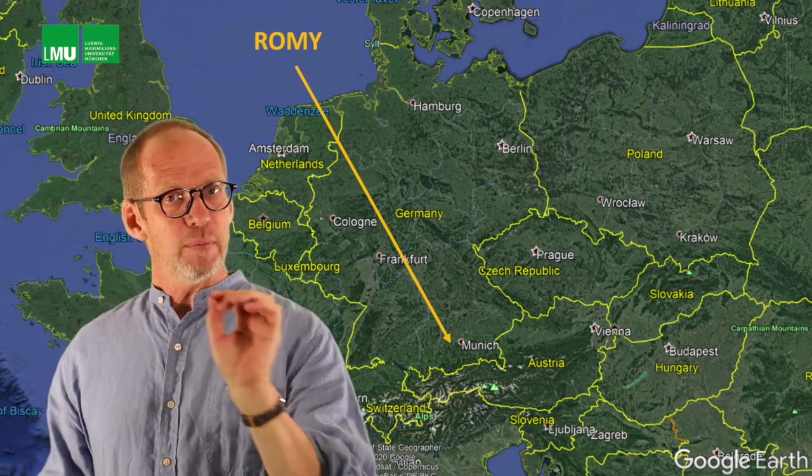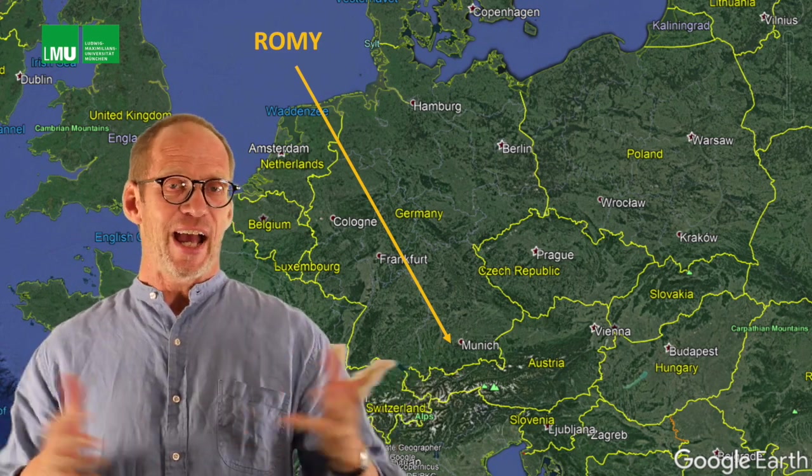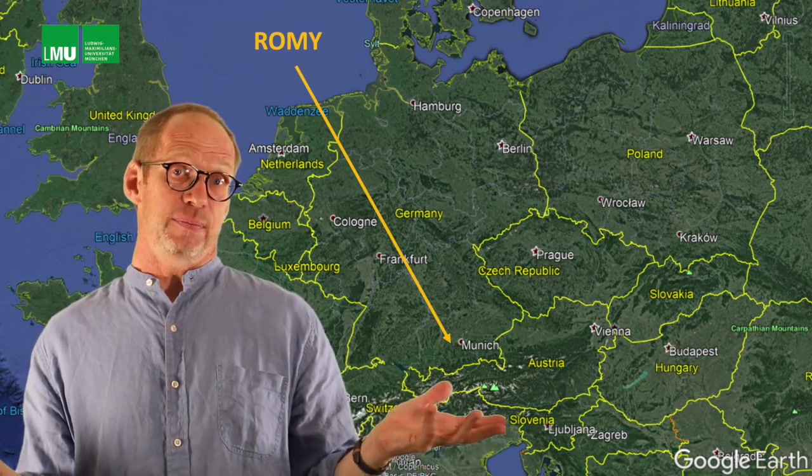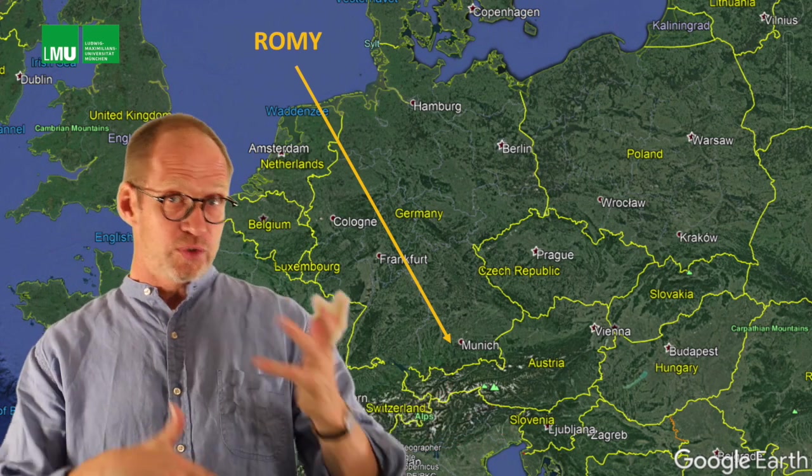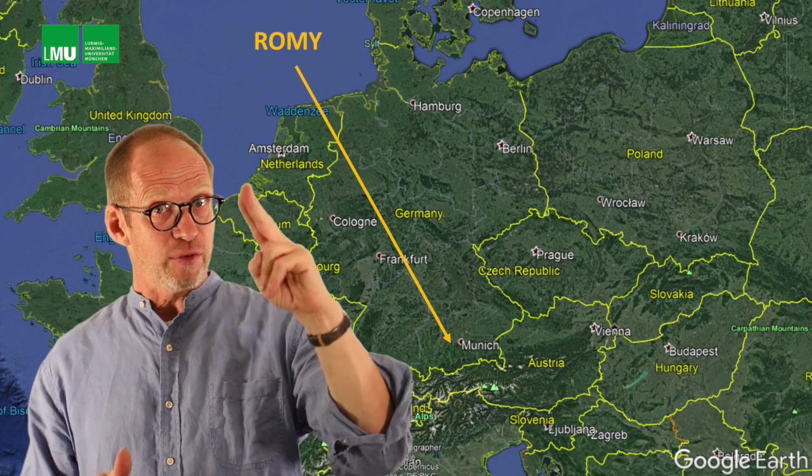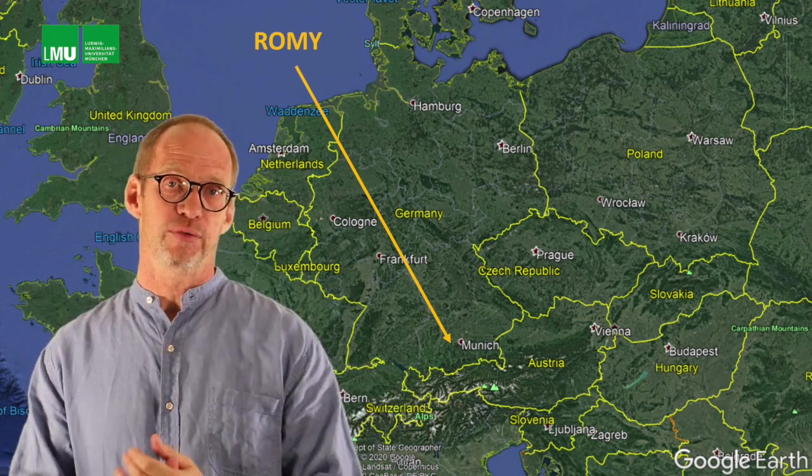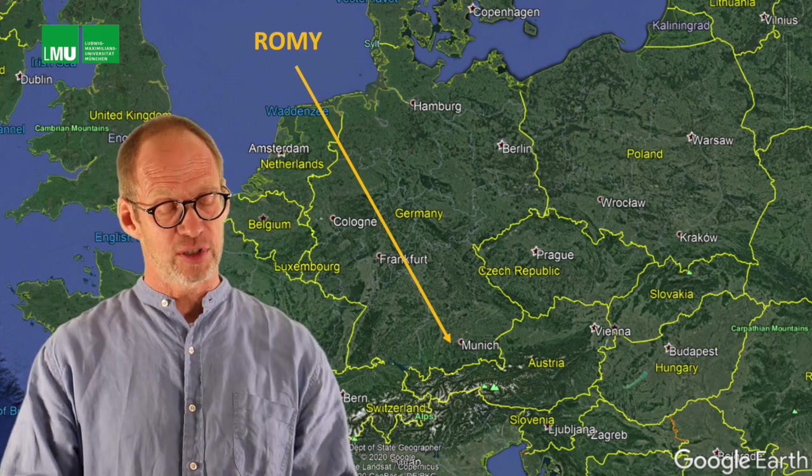Now there is one major advantage of a ring laser type measurement versus VLBI. Actually you have your measurement instantaneously. So this should be running all the time and basically in each fraction of a second provides you with an accurate measurement of the orientation of Earth's rotation axis.